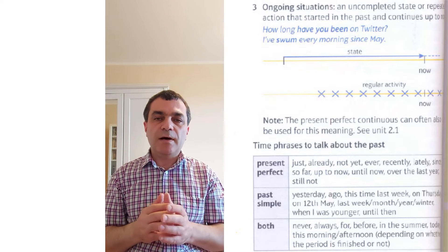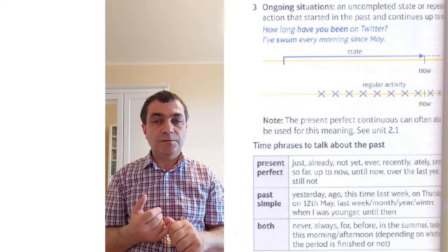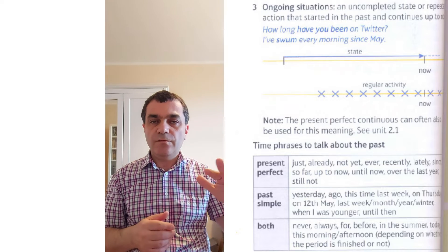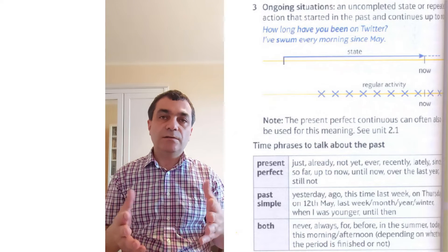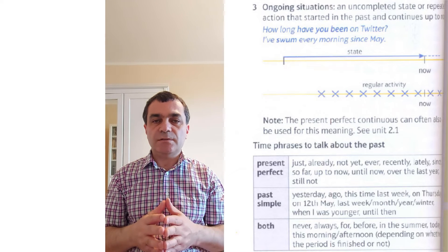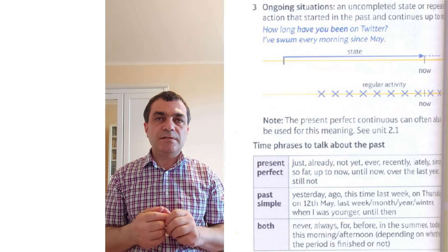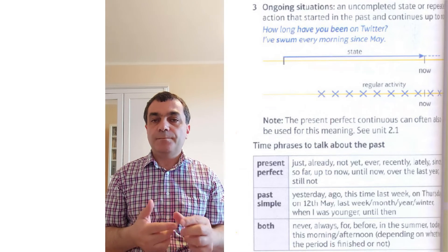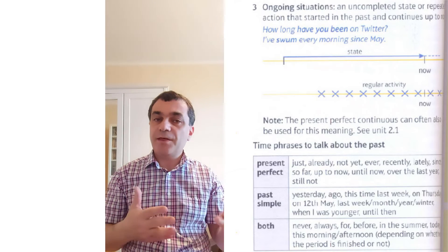Time phrases to talk about the past. Present perfect time phrases: just, already, not yet, ever, recently, lately, since, so far, up to now, until now, over the last year, still not. Past simple time phrases: yesterday, ago, this time last week, on Thursday, on the 12th of May, last week, last month, last year, last winter, when I was younger, until then.